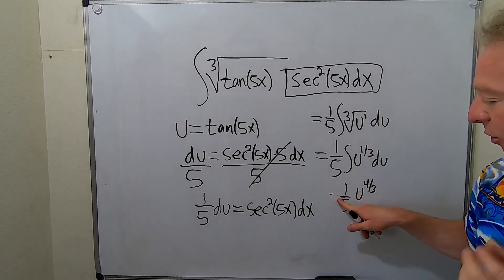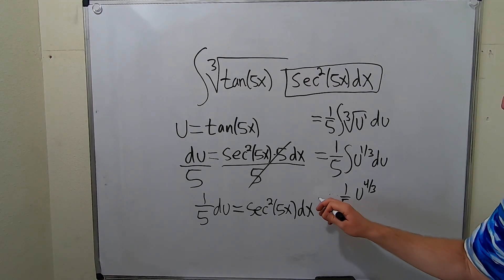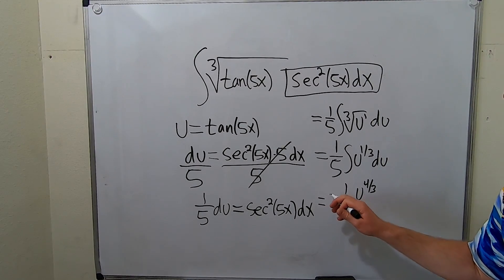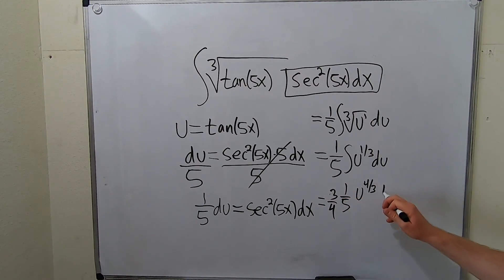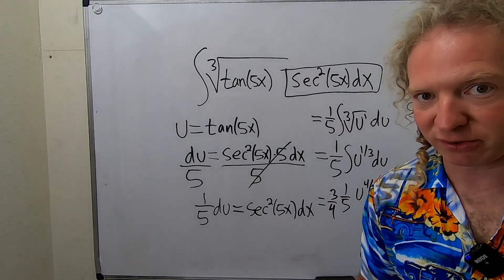And we're dividing by 4 thirds. So when you divide by 4 thirds, you really multiply by the reciprocal. So 3 fourths plus our constant of integration, capital C.